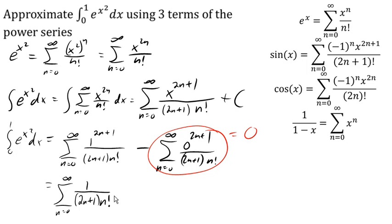And now we're going to approximate that value using three terms of the series. So we're going to start out when n equals 0, we're going to get 1 over 2 times 0 plus 1 is 1. 0 factorial is 1, so 1 over 1. When n equals 1, we're going to get 1 over 3 times 1 factorial, which is 1, so 1 over 3.